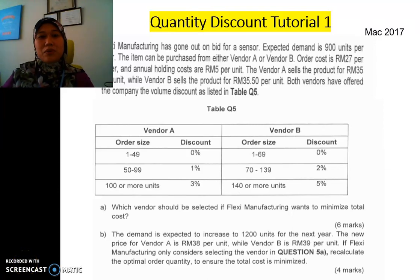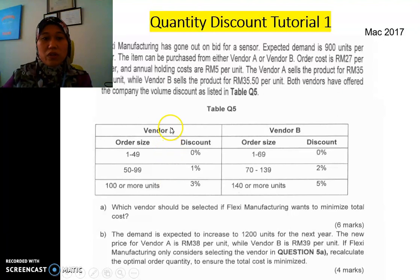Hi everyone. Today I'm going to show you the tutorial for the quantity discount in which the holding cost is fixed. For this question, we have two vendors here to consider in which vendor A and vendor B each have a different price. Vendor A costs about RM35 per unit and vendor B is about RM35.50. We have all the rules here, the order size and the discount given. Same goes to vendor B.